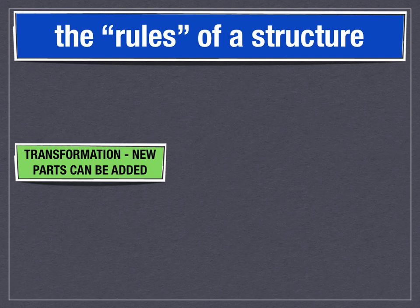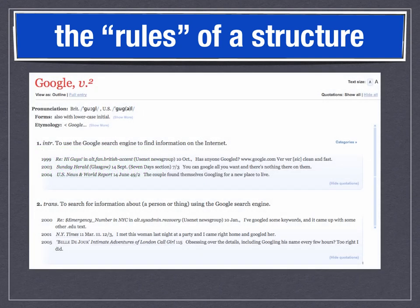Rule number two: transformation. You can add new parts to a structure. A structure is not fixed, static, or locked into place forever. For example, this is from the Oxford English Dictionary — it is the verb 'Google,' a verb that did not exist when I was your age. If you look at the entry, 1999 is the first recorded use of the verb Google: 'Has anyone Googled? Try Google.com — it's very, very clean and fast.' That's someone on a newsgroup telling friends about this new thing called Google. You can add new verbs to a structure; this verb did not exist when I was your age.